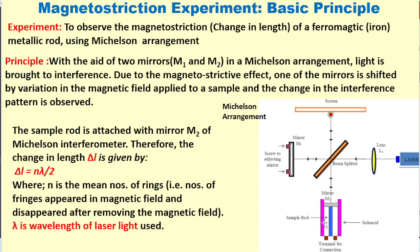The change in the length of this rod is denoted by Δl, which is given by Δl = nλ/2, where n is the average number of rings which appeared in the magnetic field and disappeared after switching off the magnetic field, and λ is the wavelength of the laser light used.